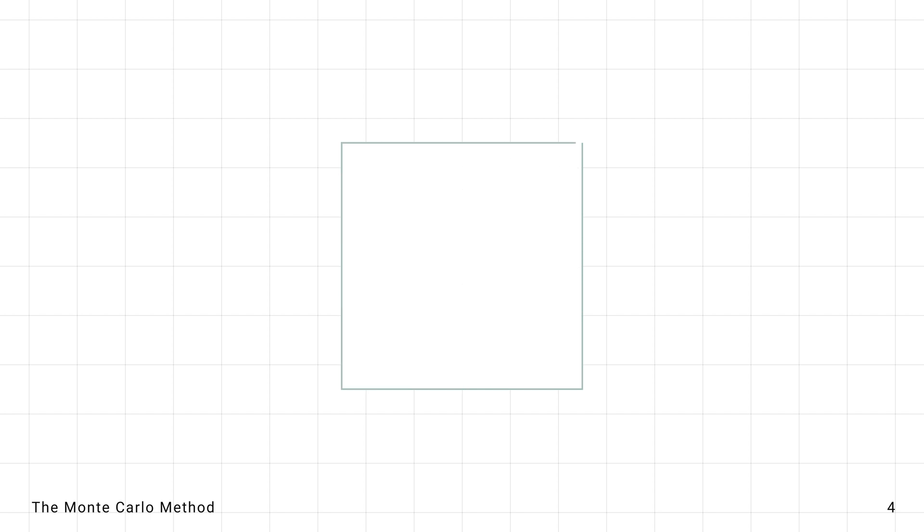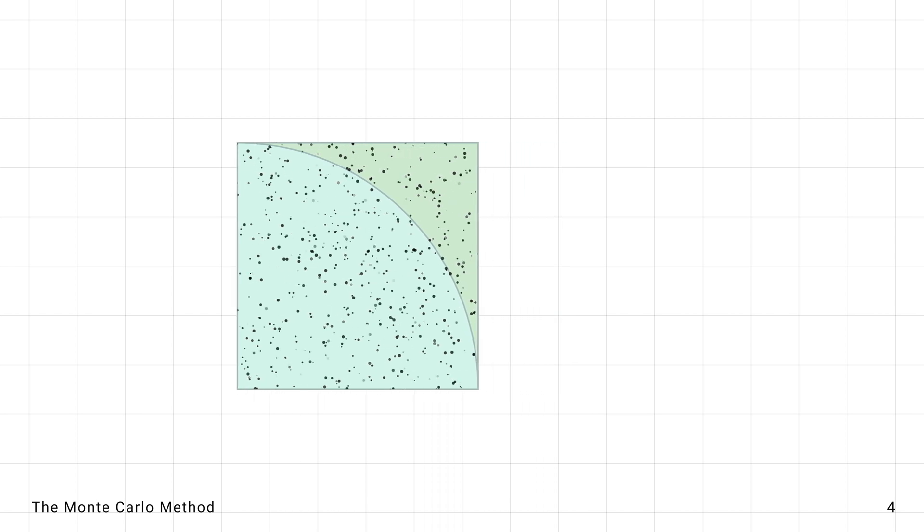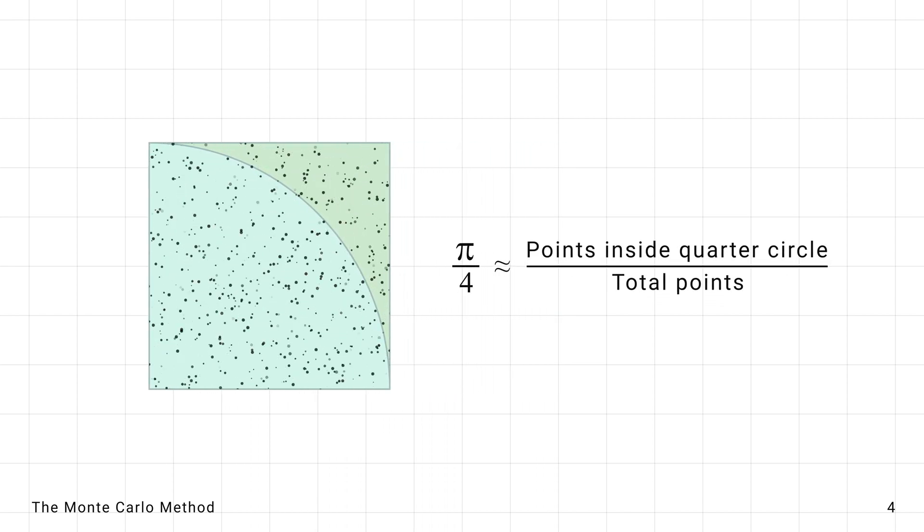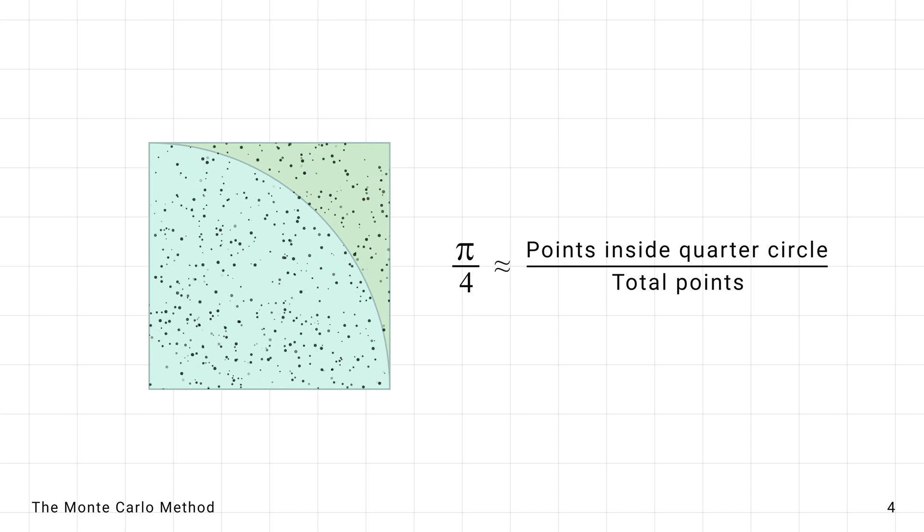In this probabilistic approach, random points are dropped inside a square that encloses the quarter circle. The ratio of points inside the quarter circle to the total gives an estimate of pi, showing how random events can reveal hidden patterns.